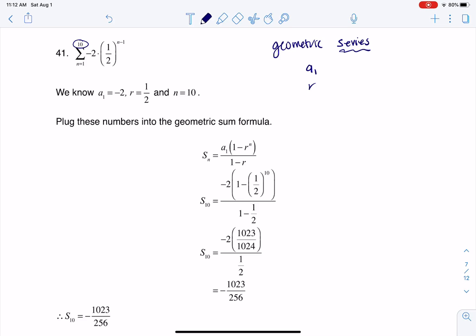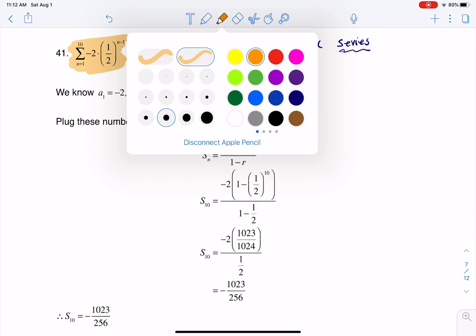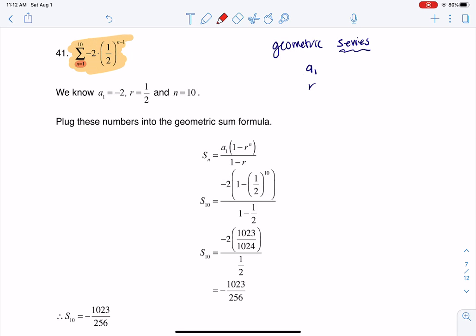So if I look at this, the first thing I want to do is I want to plug in n equaling—let me color code this—I want to plug in n equaling 1 here and see what I get back out so that I can find a sub 1. So let me go ahead and do that. I would have negative 2 times 1 half to the 1 minus 1, that's negative 2 times 1 half to the 0, which would be negative 2 times 1, or just negative 2.